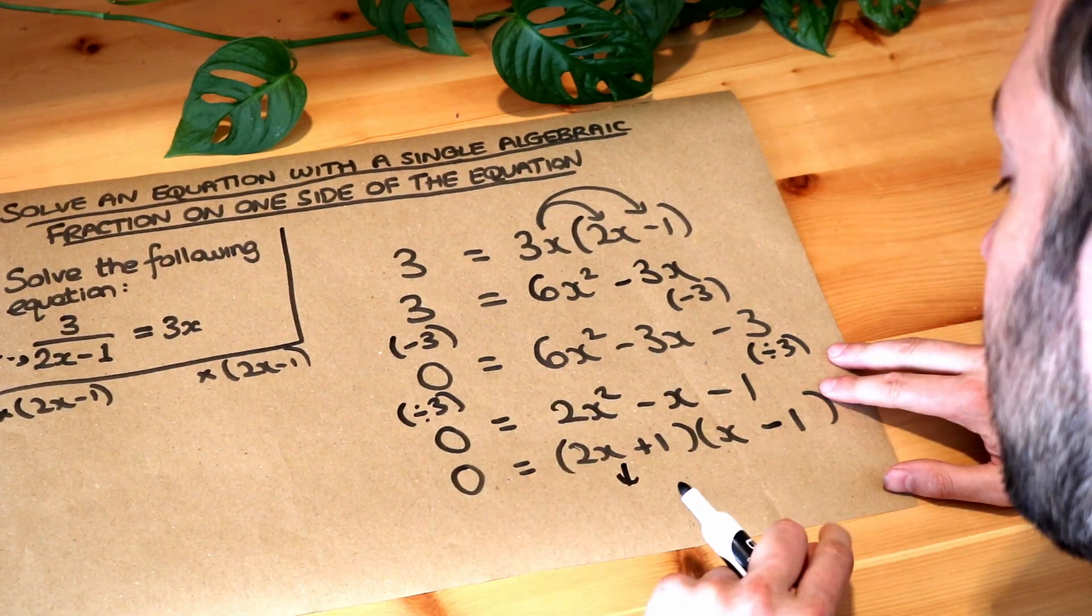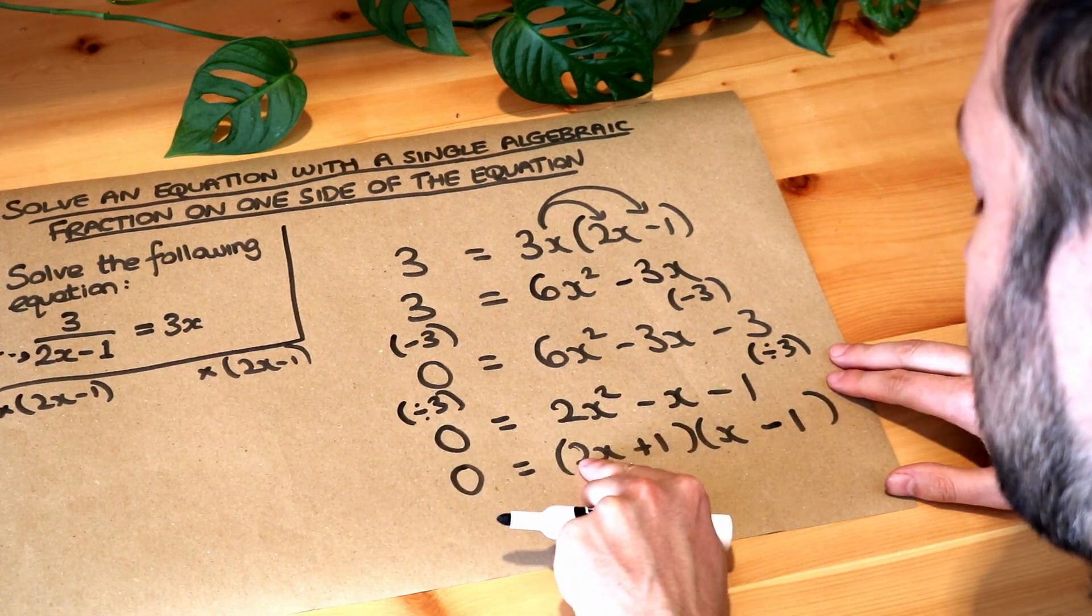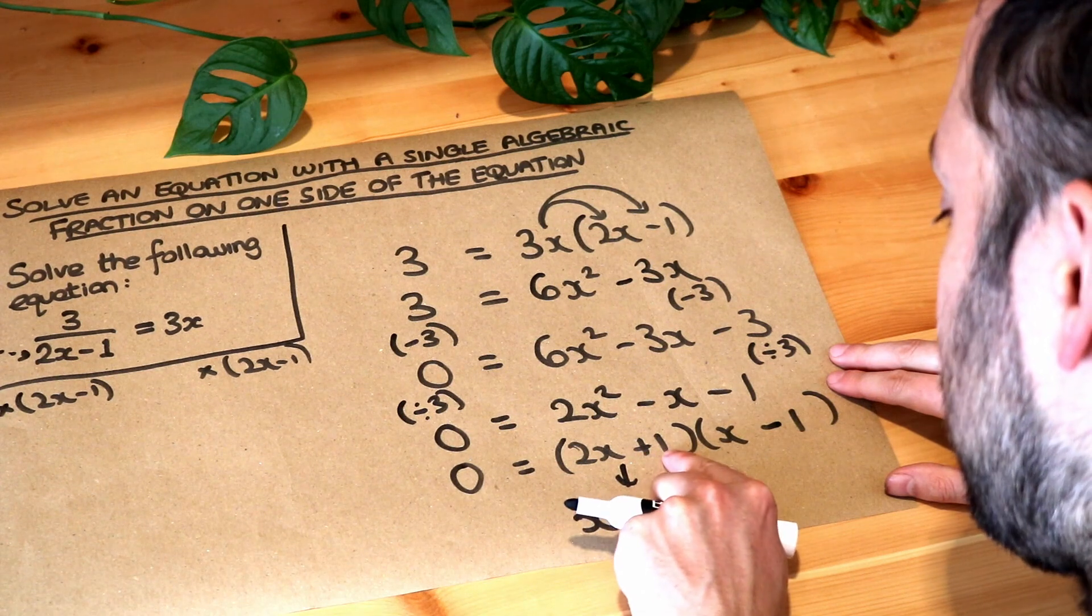Now if 2x plus 1 is 0, remember the quick way of doing this: you just negate that number and then divide by that. So it's minus 1 over 2.